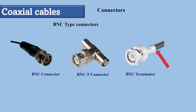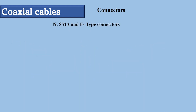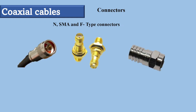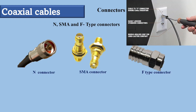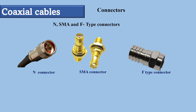Another class of connectors largely used with coaxial cables are N-type, SMA, and F-type connectors. N-type connectors are waterproof radio frequency connectors and they can carry microwave frequency signals. SMA, or Sub-Miniature Version A, connectors are used to connect to a cable modem on cable TV and cable internet. RG6 coax cables are normally terminated with F-type connectors.